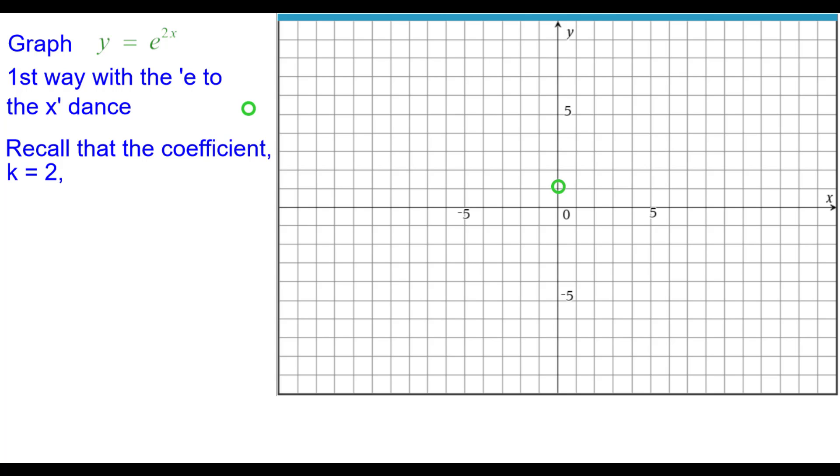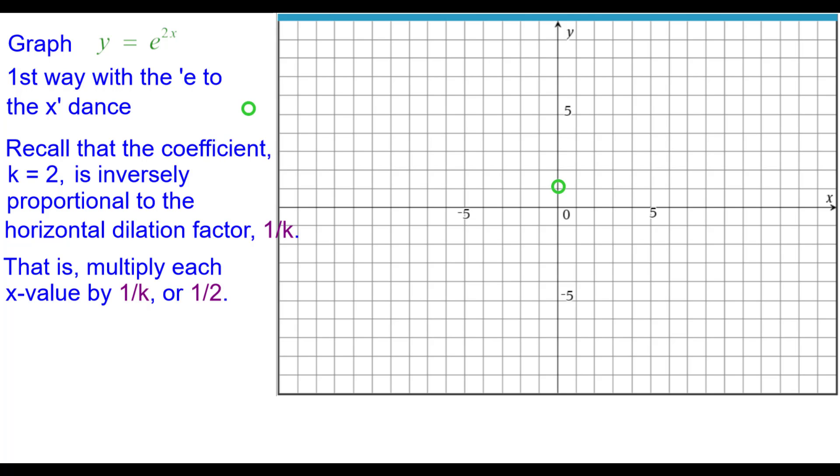Also recall that the coefficient k equals 2 is inversely proportional to the horizontal dilation factor represented by 1 over whatever k is. That is multiply each x value by the reciprocal of k, which in this case is 1 half.